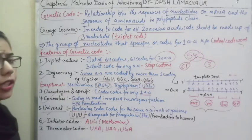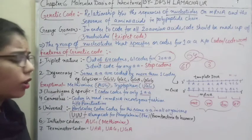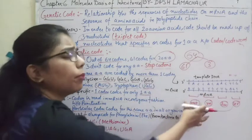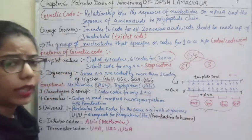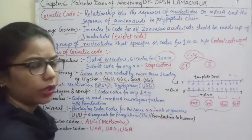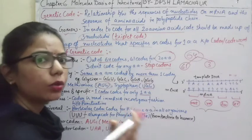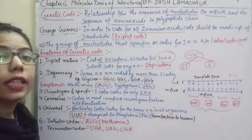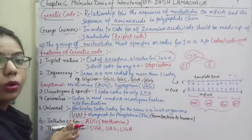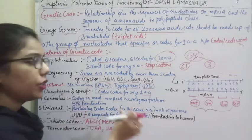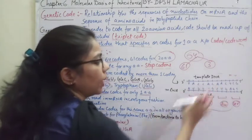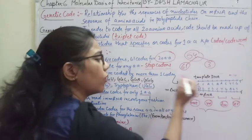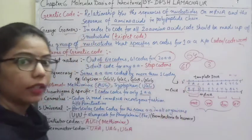The next feature is the initiator codon. As I have said, in every protein the first amino acid is methionine, which is AUG. So AUG is considered the initiator codon — to initiate translation, the first codon will always remain AUG.